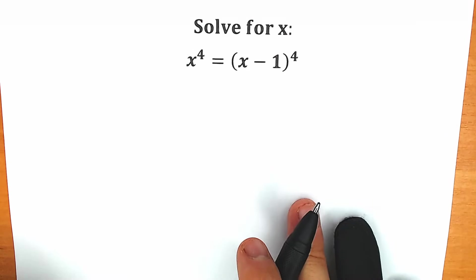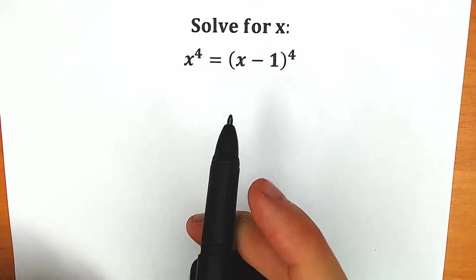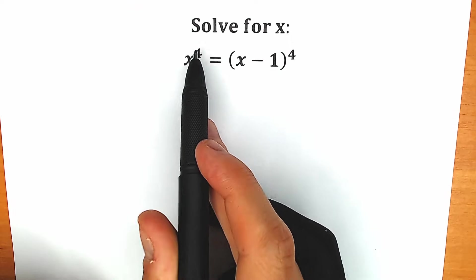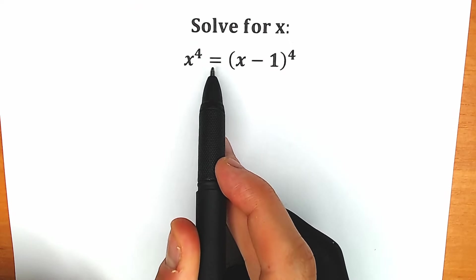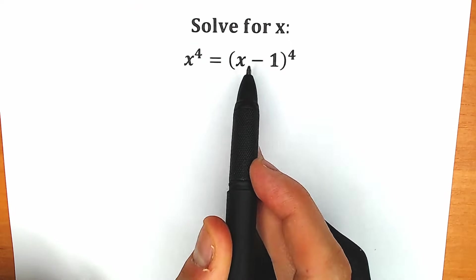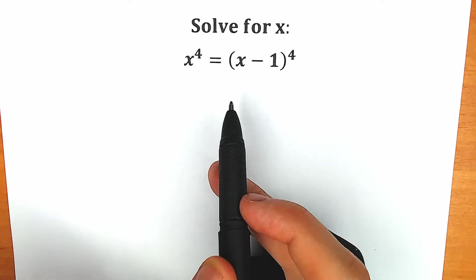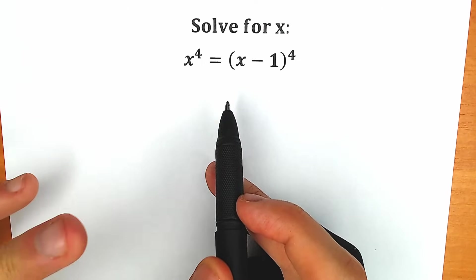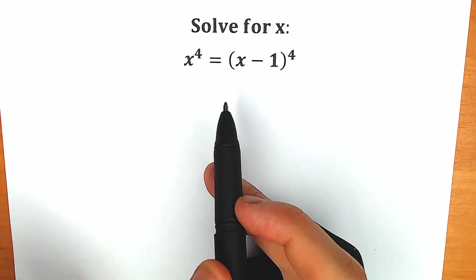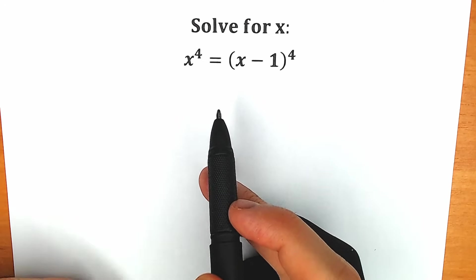Today we have a very interesting and tricky algebra question: x to the fourth power equals x minus 1 to the fourth power. If you have your solution, you can write it down in the comment section and we will check your answers.